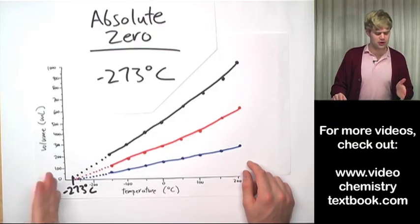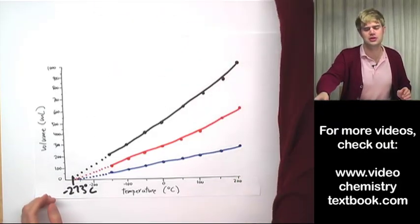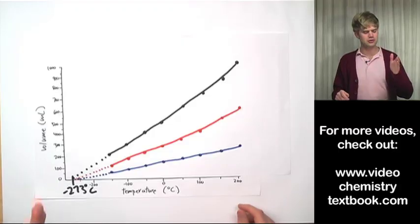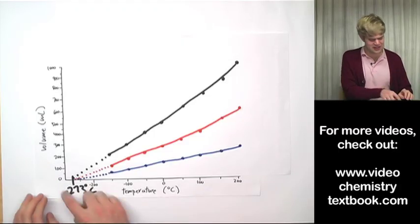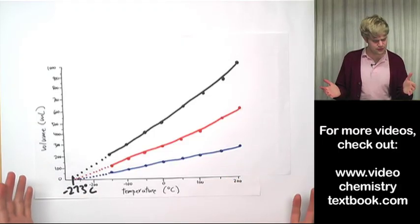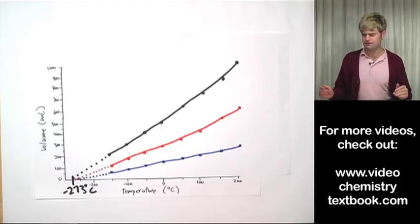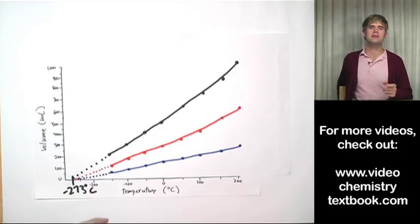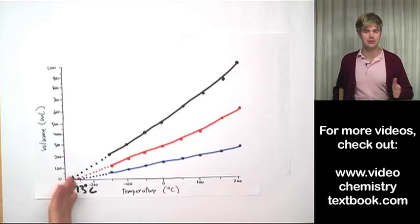So absolute zero, negative 273 degrees Celsius, the coldest possible temperature. But the number is kind of a pain because it's negative and it's a big number. So in the 1800s, somebody by the name of Lord Kelvin came along and he said,